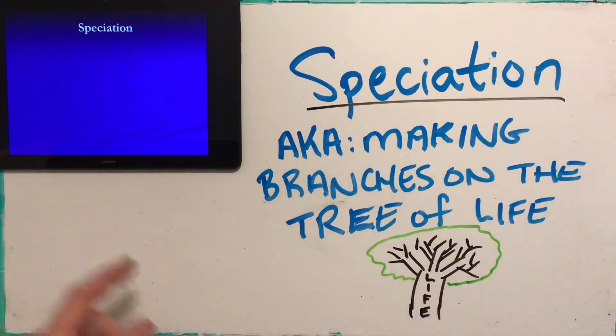Reproductive isolating mechanisms are divided into prezygotic and postzygotic. Prezygotic means before a zygote is formed — sperm and egg never get together because a zygote is the product of an egg and sperm cell joining. Postzygotic means the zygote was formed but something after that stops the line. One results in no zygote ever being formed; the other is the zygote forms but something after it stops the reproductive line.